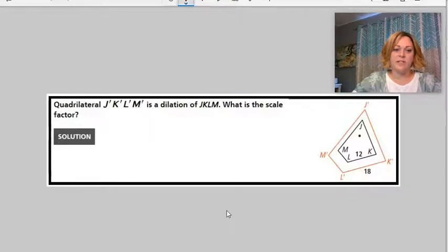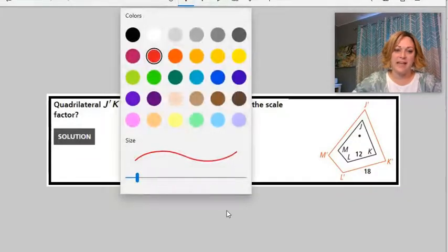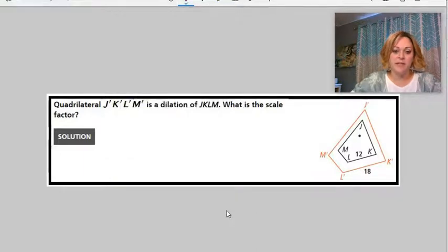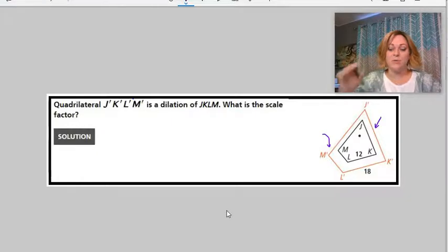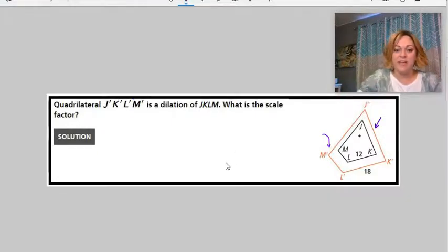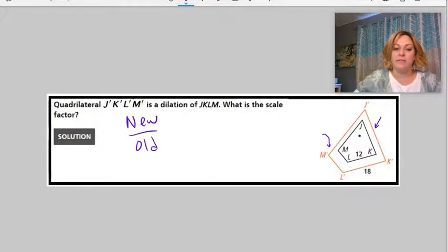Okay, for this one it says the quadrilateral J-K-L-M prime is a dilation. So it is a dilation. Notice those tick marks. So this red one out here, this outside one is the image where the inside one is the pre-image. So you have to figure out what the scale factor is. To find a scale factor, you can do the new shape over the old shape, that will give you the scale factor.